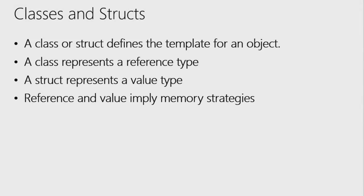A class represents the entire body of functionality. If you have a person, it represents the entire person — all the things we know about it, like eye color and name, which we'll talk about as properties, but also its abilities, which we'll talk about as methods, its ability to speak, and events — its ability to communicate back to us.